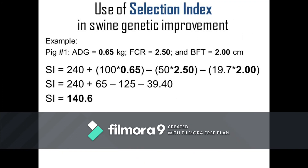Suppose pig number 1 has an ADG of 0.65 kilogram, FCR of 2.5, and BFT of 2 centimeters. The selection index of this animal is calculated as 240 plus the product of 100 and 0.65, minus the product of 50 and 2.5, minus the product of 19.7 and 2 — or 240 plus 65 minus 125 minus 39.4 — and the calculated selection index score of this animal is 140.6.